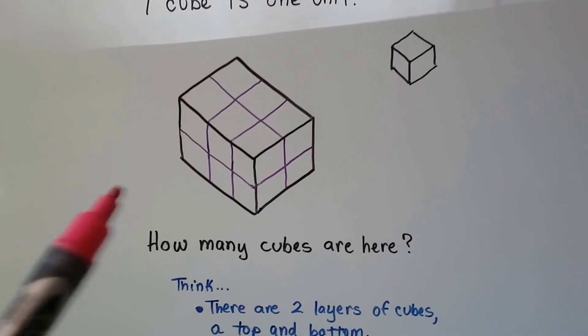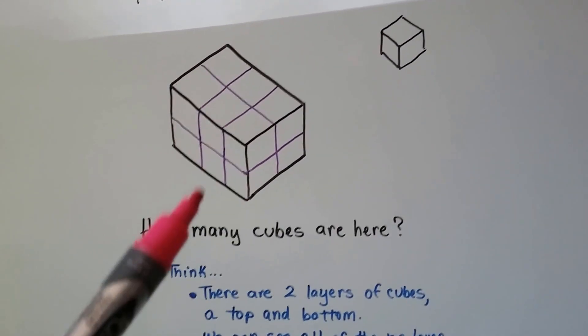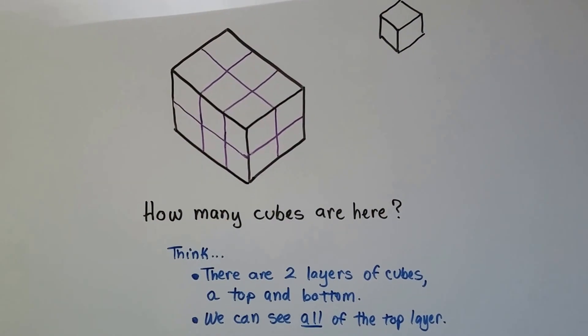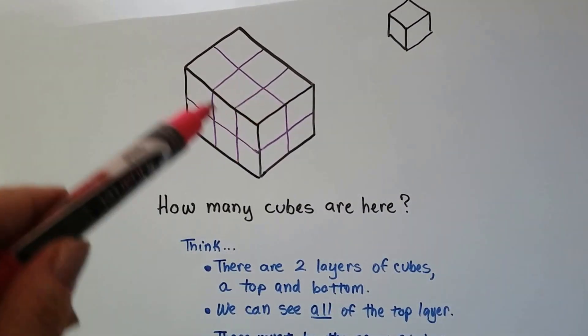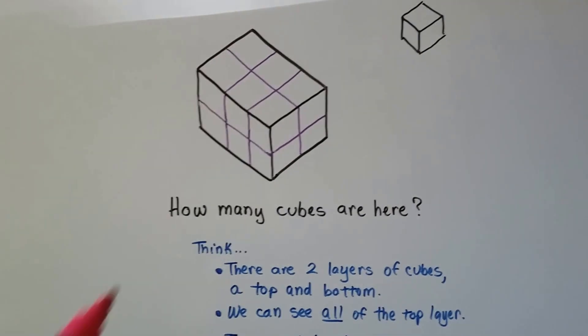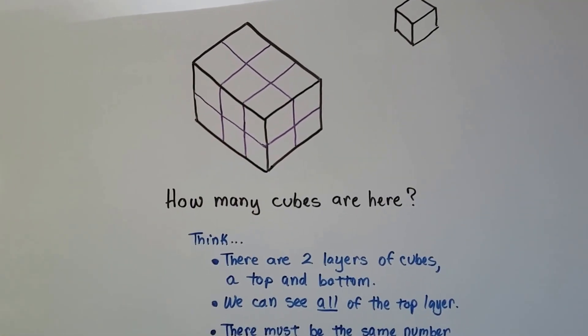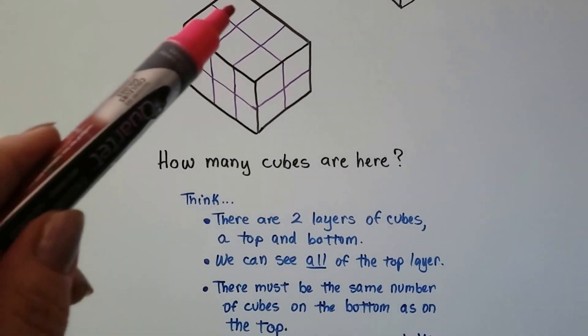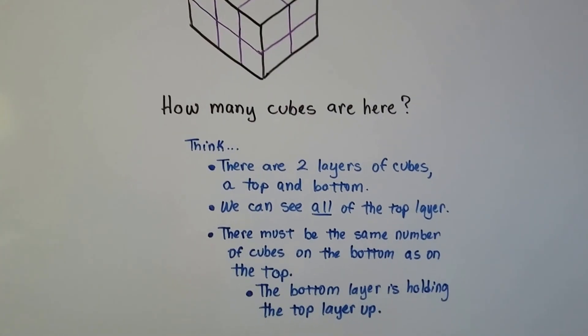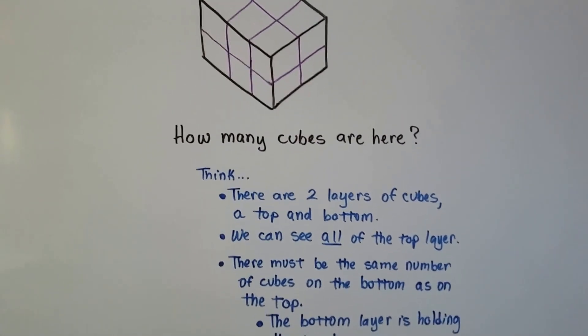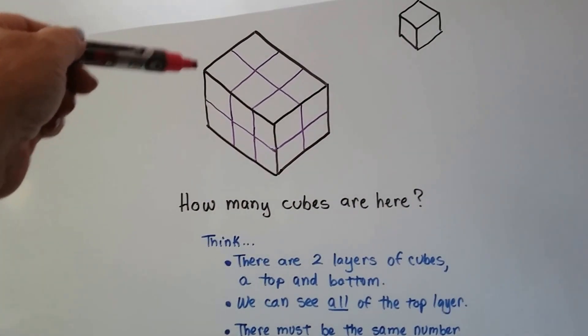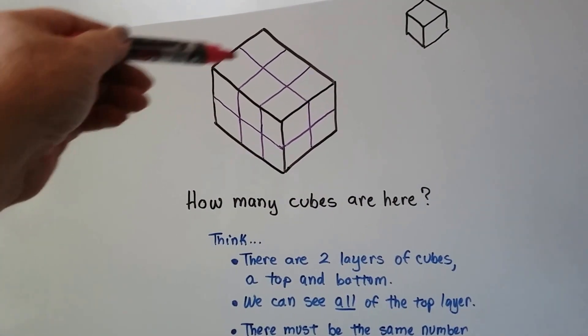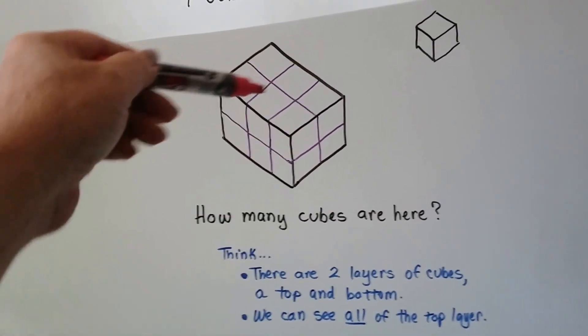There's two layers of cubes. There's a top layer and a bottom layer. And we can see all of the top layer right here. We can't see all of the bottom layer, can we? But there must be the same number of cubes on the bottom as the top because the bottom layer is holding the top layer up. If there wasn't anything back here, hiding behind the back here, then these wouldn't be held up, would they?